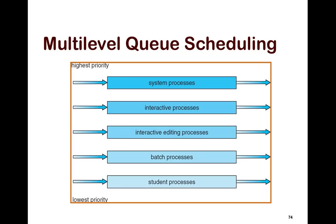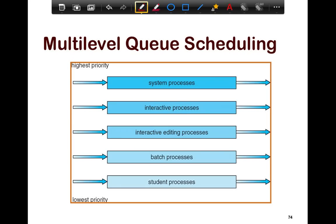Here's an example of a multi-level queue where I have classified processes into five levels: system processes, interactive ones — system ones obviously have a higher priority because you don't want the system to slow down because of a user-level application. You've got interactive editing processes where you care about the process only when you have keystrokes, then you have batch, and then possibly something like student jobs. System processes have the highest priority — the higher up the queue in the figure, the higher the priority.